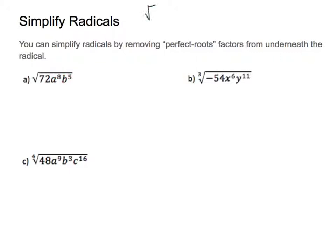For example, consider the square root of 18. 18 is not a perfect square like 4, where the square root of 4 is 2 and works out perfectly. 18 can be broken down as 6 times 3, and 6 as 2 times 3. Because this is a square root, I can find a pair of 3s — so 3 comes out of the root. But 2 is my leftover, so I have the square root of 2 still inside. The pair of 3s is what we call a perfect root factor.